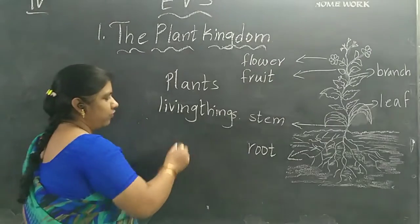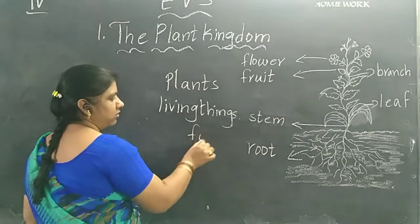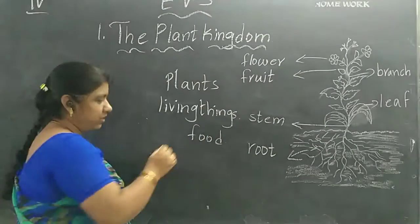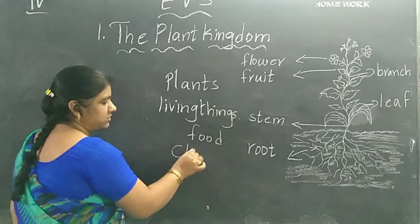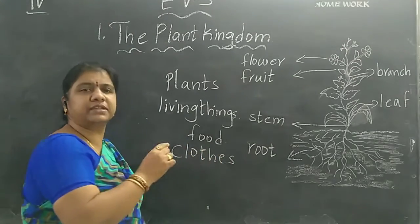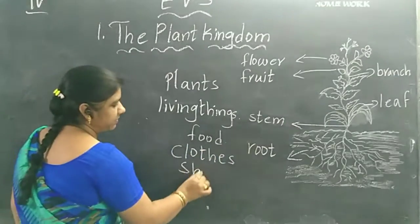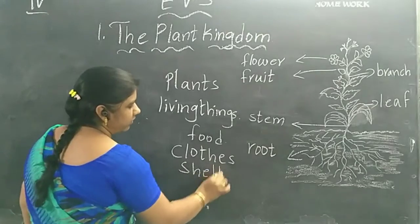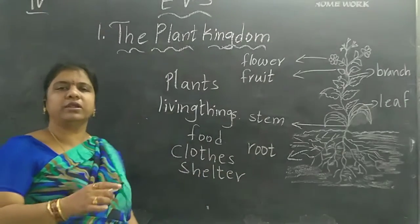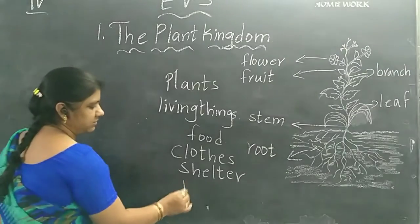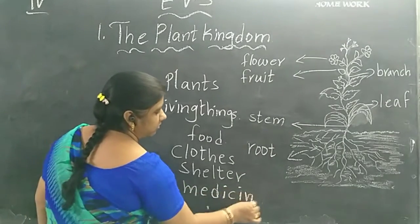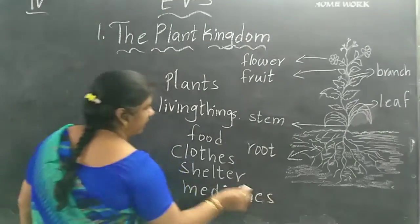From plants we get food and fruit, clothes, and shelter — parts of houses are made with branches. And not only these, we also get medicines and rubber.